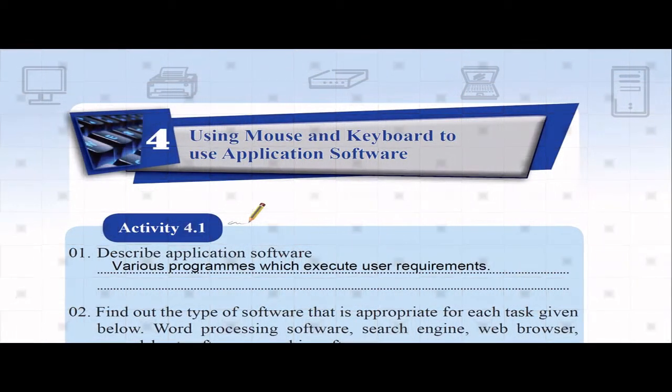Hi children, welcome to Equid Learning. This is grade 6, chapter 4 in the workbook. If you haven't watched my previous videos, there's a separate playlist for the textbook activities of grade 6, and another separate playlist where I will be talking only about grade 6 workbook chapters. This chapter is about using mouse and keyboard to use application software.